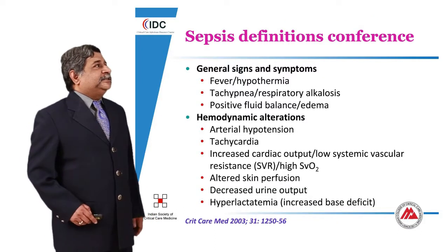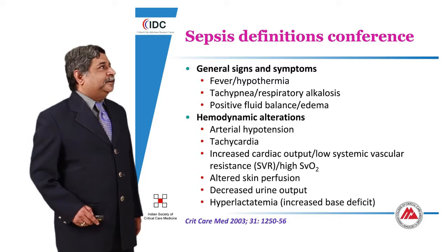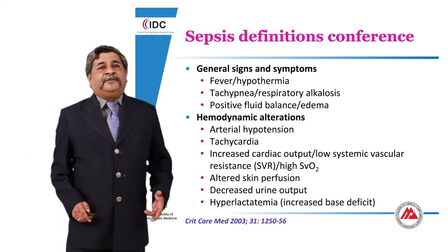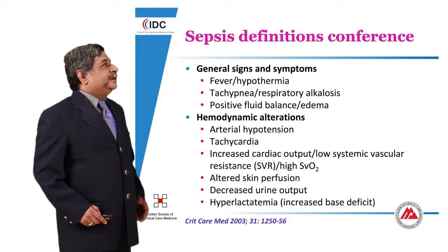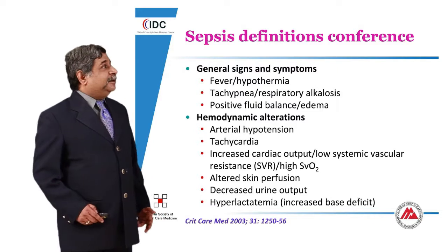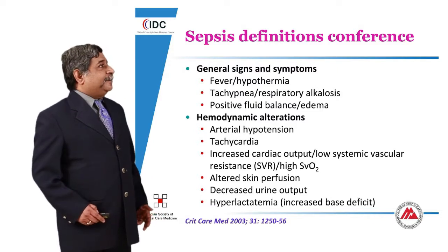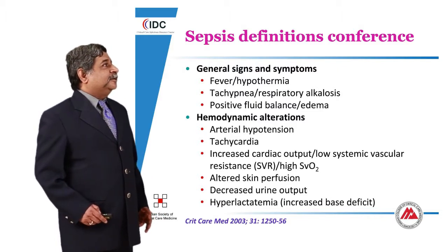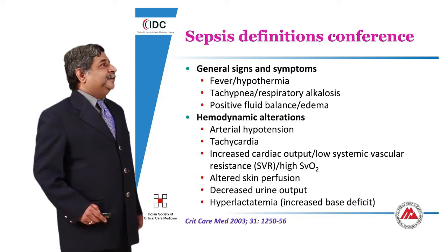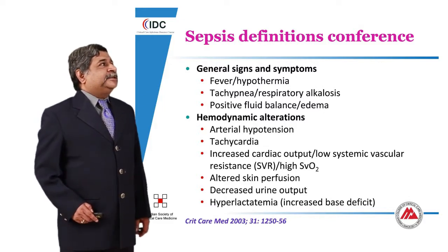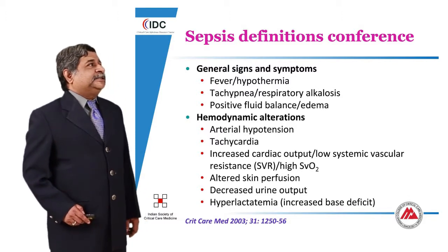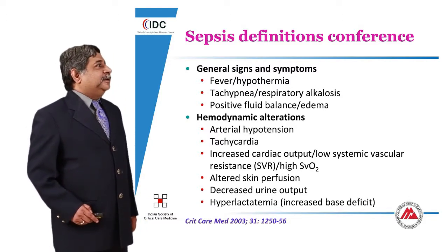Therefore, there was a consensus conference held in 2001 where they tried to define sepsis. The sepsis syndrome is not very easy to define, but they said that general signs and symptoms — similar to the SIRS concept — include fever and hypothermia, tachypnea and respiratory alkalosis, positive fluid balance or presence of edema, and general inflammatory reactions such as altered white cell count or increased biomarker concentrations such as CRP, IL-6, or PCT.